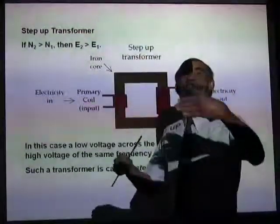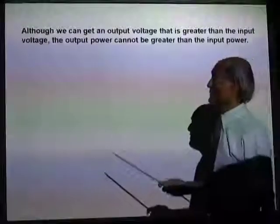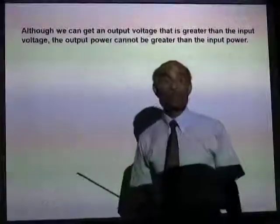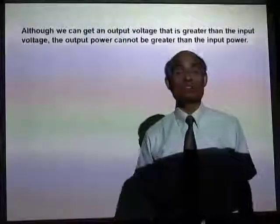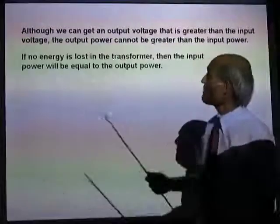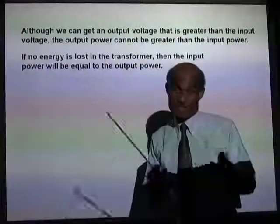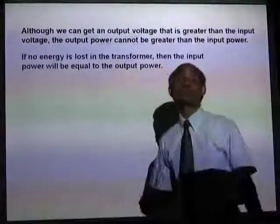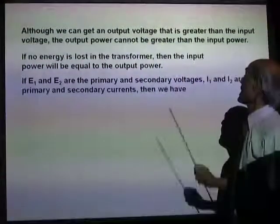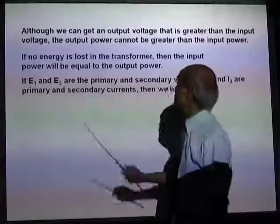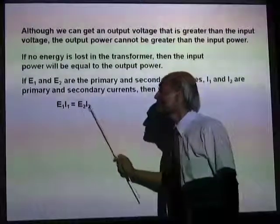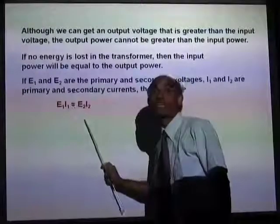Even though we can get an output voltage greater than the input voltage, the transformer is not creating energy. The total energy cannot change, and the output power can never be greater than the input power. For an ideal transformer: E1 times I1 equals E2 times I2 — input power equals output power.